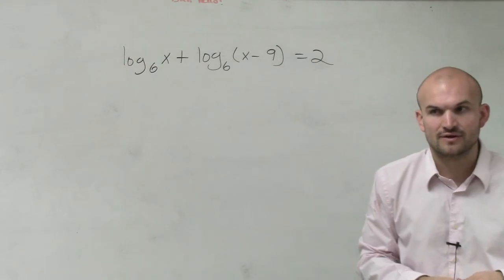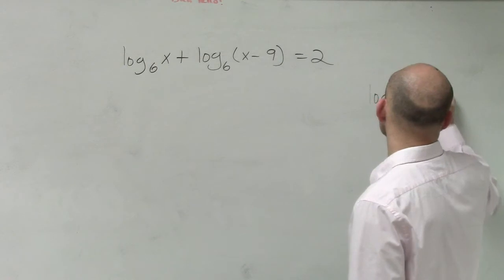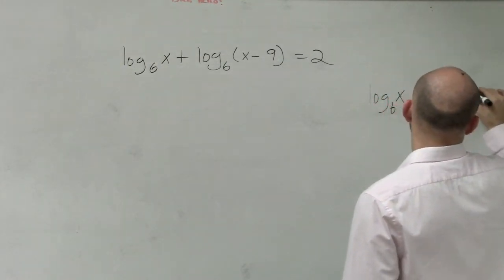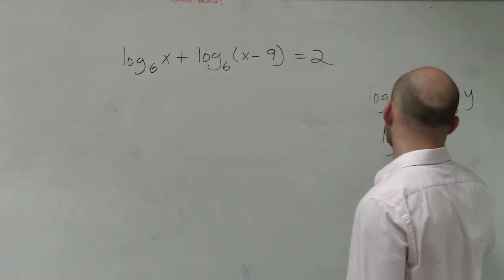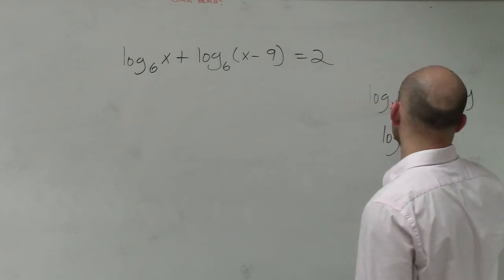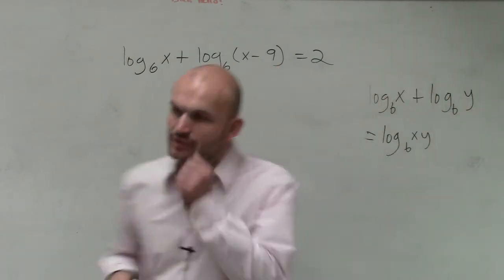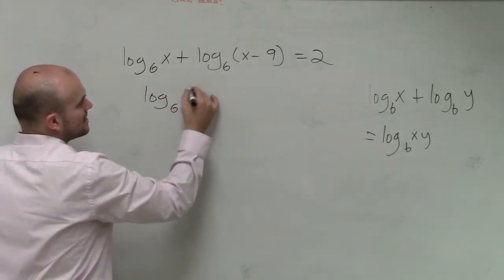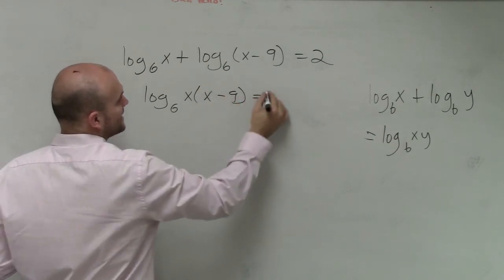Going back to our properties of logarithms, we know that when you have logarithms with the same base, to combine them, what we can simply do is multiply. So it'd be log base b of x times y. So if you look at this, to combine these two, I can say this is now going to be log base 6 of x times x minus 9 equals 2.